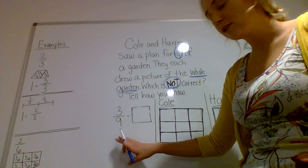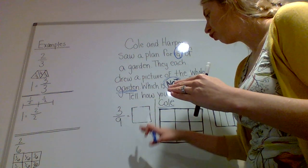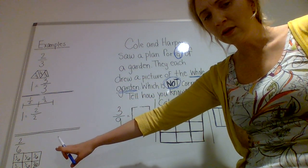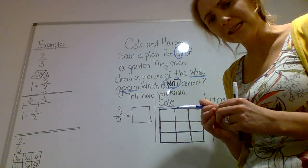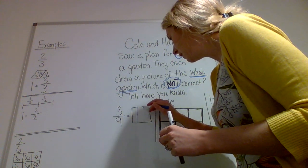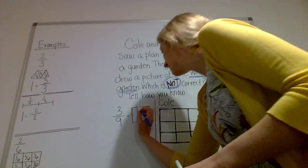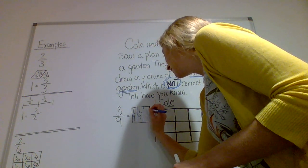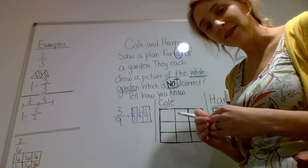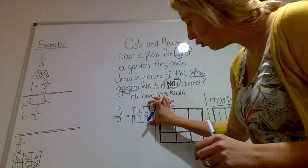Cole and Harper saw a plan for three-ninths of a garden. They each drew a picture of the whole garden. So Cole and Harper drew a picture of the whole garden. It kind of sounds like what we did over here, which is not correct. So which one of these is not correct? We're going to have to figure out, is it Cole or is it Harper? And then tell how you know. So let's take a look. They gave me a nice little square of three-ninths. So I notice this shows three-ninths. Well, I got to remember in my head that this represents three-ninths.